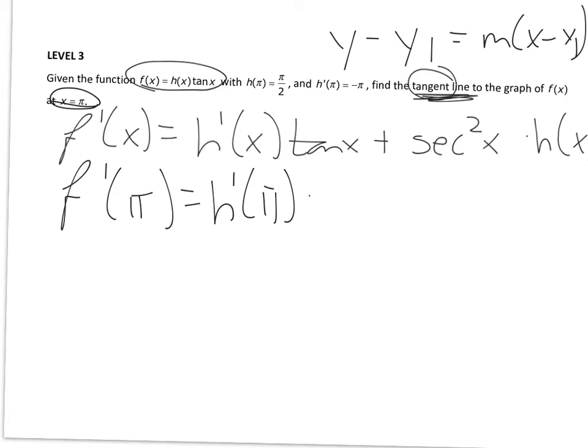It goes from negative pi over 2 to positive pi over 2. So pi is analogous to 0 in terms of the periodicity of the function. So tangent of pi is equal to 0.